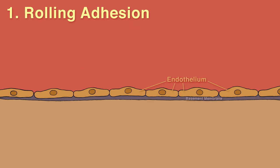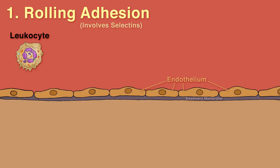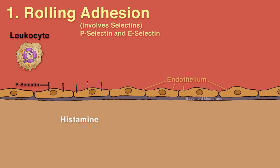Step 1: Rolling adhesion. The initially weak adhesion between leukocytes and the vascular endothelium involves selectins. The two important types are P-selectin and E-selectin. P-selectin appears on the endothelial cell surface within minutes of exposure to histamine, which is released by mast cells.